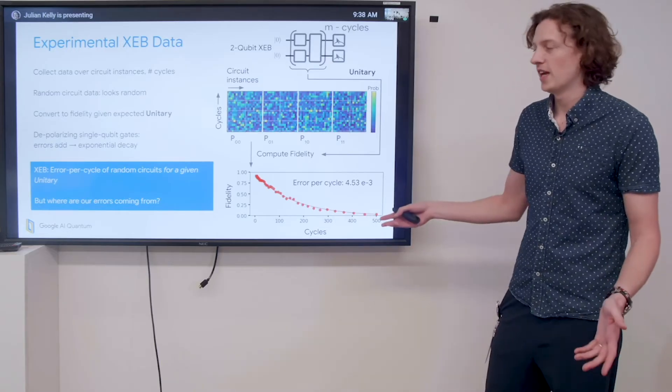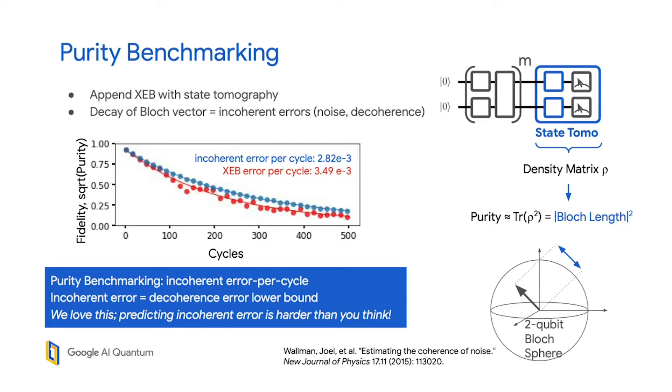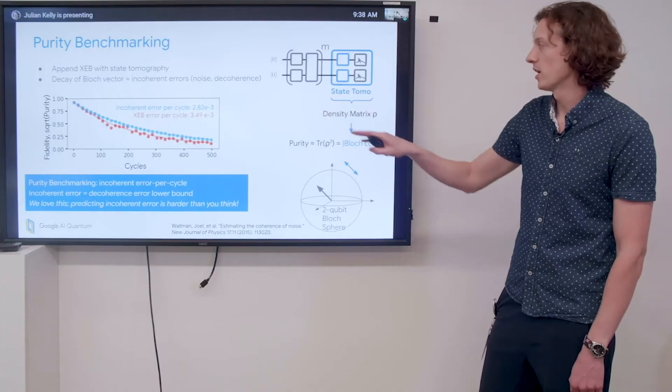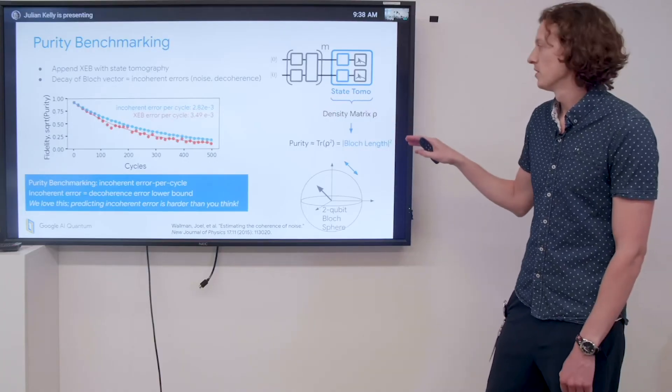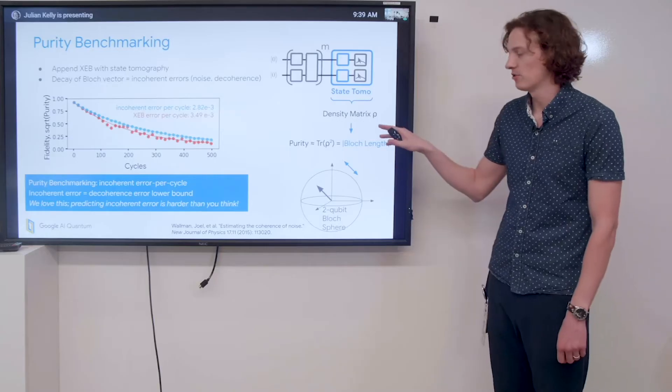This is fantastic, but we might be interested in understanding where exactly our errors are coming from. This is where a technique known as purity benchmarking comes in. Essentially, we're going to take this XEB sequence and append it with state tomography. In state tomography, we run a collection of experiments to extract the density matrix rho.